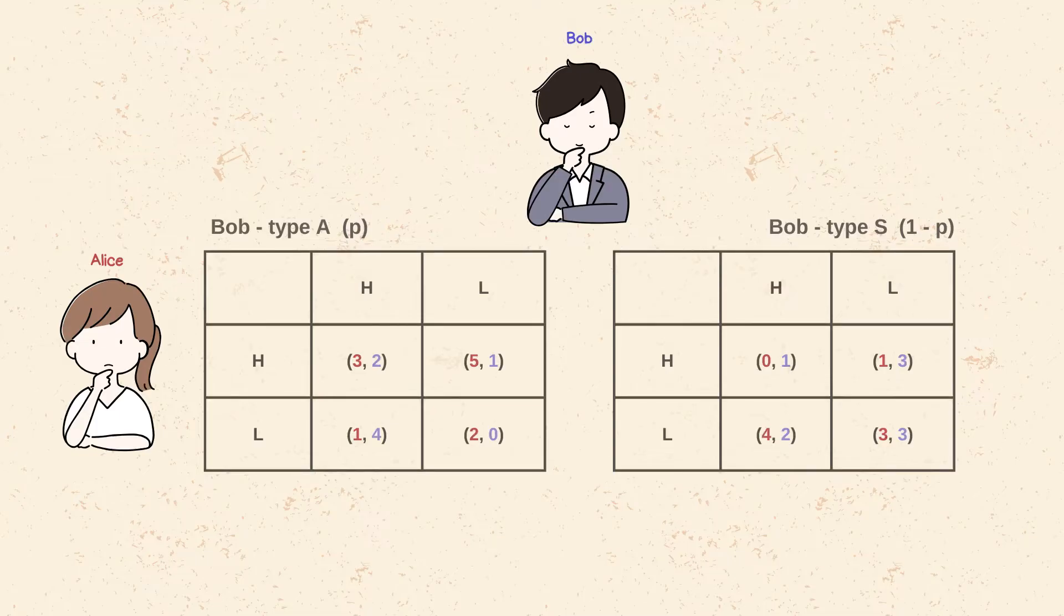Here are the payoff matrices for the different types of Bob. On the left, we have Bob as type A with the probability of P, and on the right, Bob as type S with the probability of 1 minus P.